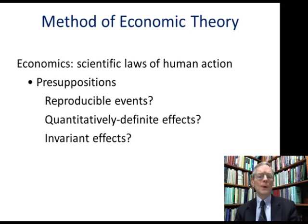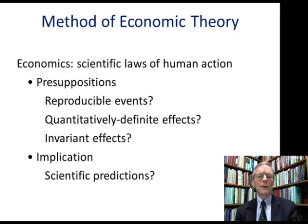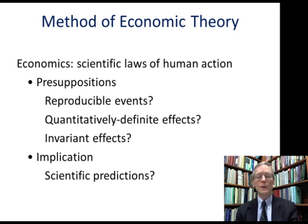Third, we're also not safe presupposing that effects are invariant over time — that there is constancy of any quantitatively definite effects that might exist. Quite to the contrary, we would presuppose that the quantitative magnitude of the effect of a price change would vary from one action to the next, from one person to the next, from one place to the next, and from one time to the next. The implication is that it's very unlikely we can make scientifically precise quantitative predictions about human action in the same way we do in the natural sciences.